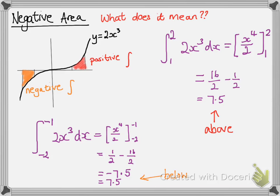You can see that although we've got the same area, the negative one is the one that goes below the axis and the positive one above the axis.